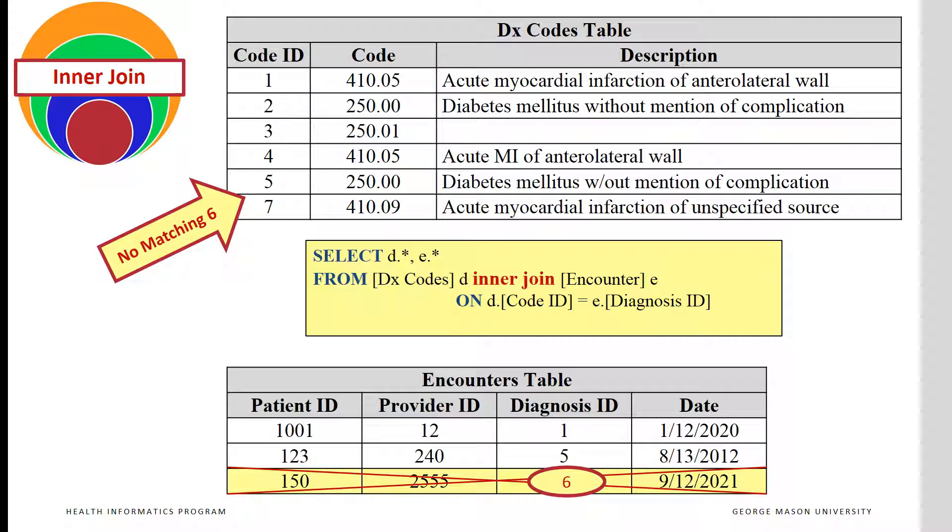The situation is not the same for diagnosis ID 6. There is no diagnosis ID 6 in the diagnosis table, so the corresponding encounter row will not be included in the combined table.